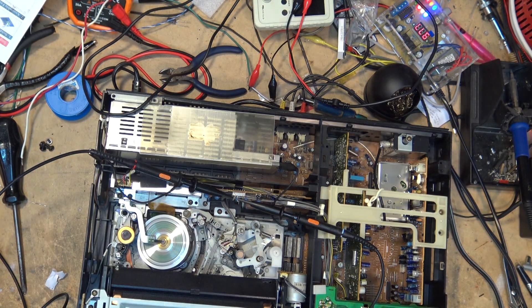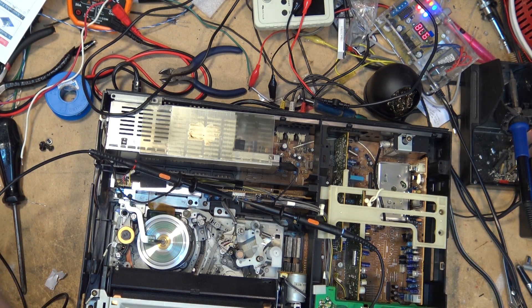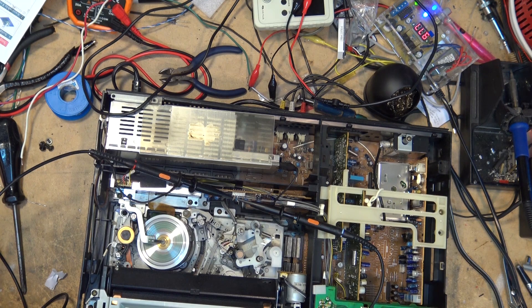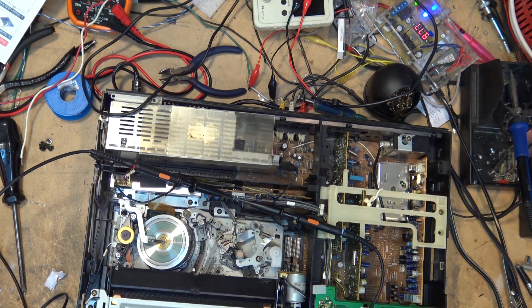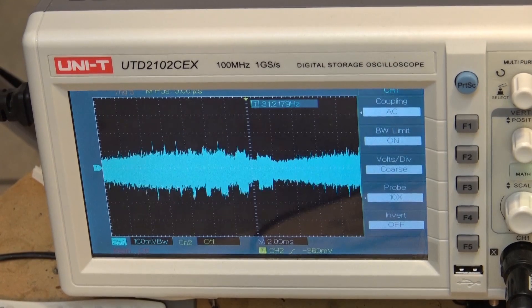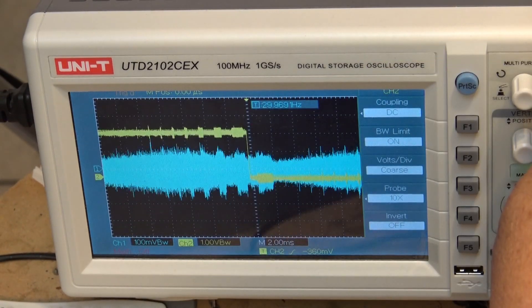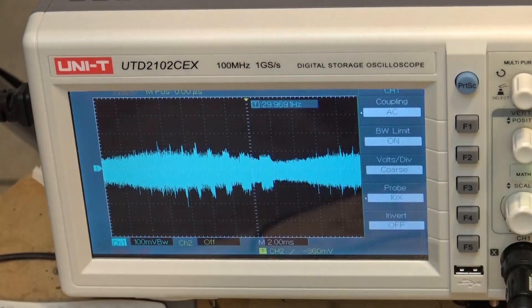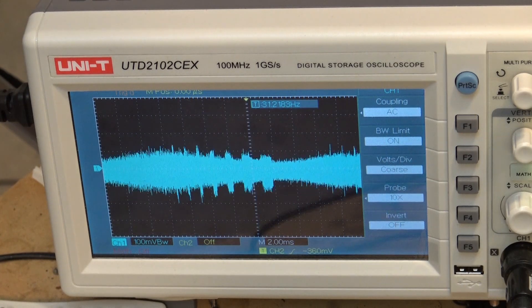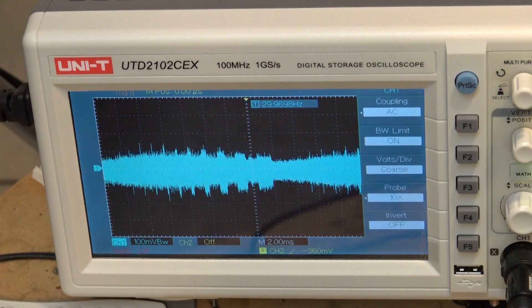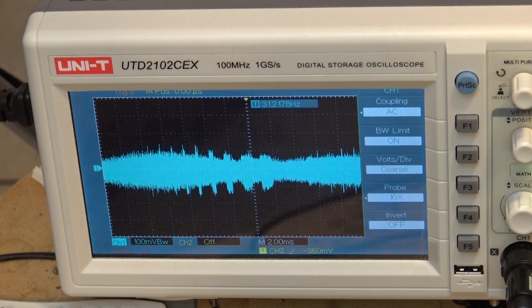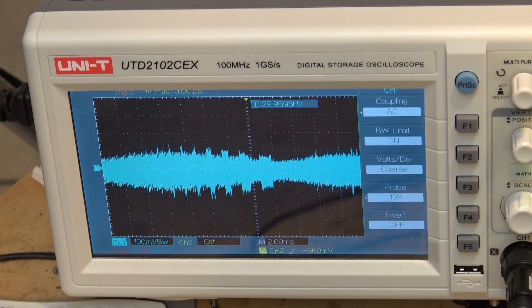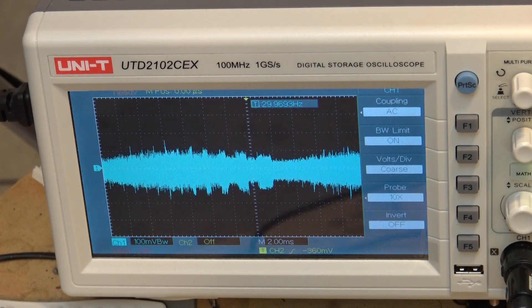If I hook up my other scope, my real scope, and hook up channel one to the RF test point and channel two - this is my cheap DSO but my cheap DSO will do this. Here's my other scope. I'm triggered off of channel two and if I adjust the tracking you'll see that the waveform will change.